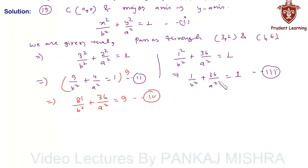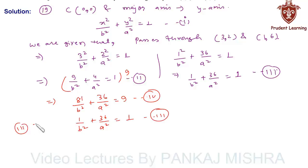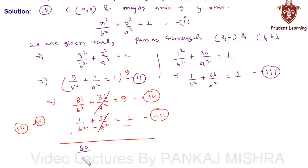Now we subtract equation 3 from equation 4. Writing equation 3 under equation 4: the 36 over a² terms cancel each other. Then 81 over b² minus 1 over b² gives 80 over b² equals 9 minus 1, which is 8. This implies that b² equals 80 over 8, which is 10. So b² equals 10.